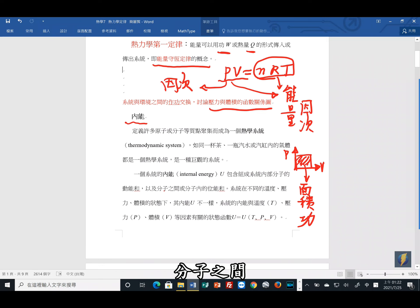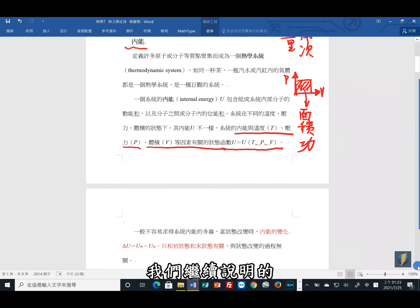包含组成系统内部分子的动能,还有分子之间、分子内,它们的位能和。系统在不同的温度、压力、体积的状态下,它的内能U会有不一样的现象。所以系统的内能,它其实是跟温度、压力、体积这个因素有关,我们可以把它形成了一种函数关系。